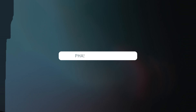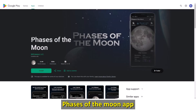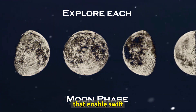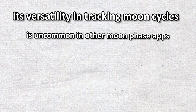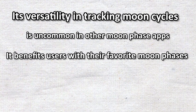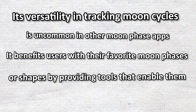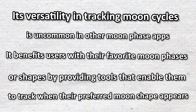Phases of the Moon — best for tracking the moon. The Phases of the Moon app has advanced features that enable swift and accurate moon tracking. Its versatility in tracking moon cycles is uncommon in other Moon Phase apps. It benefits users with their favorite moon phases or shapes by providing tools that enable them to track when their preferred moon shape appears.